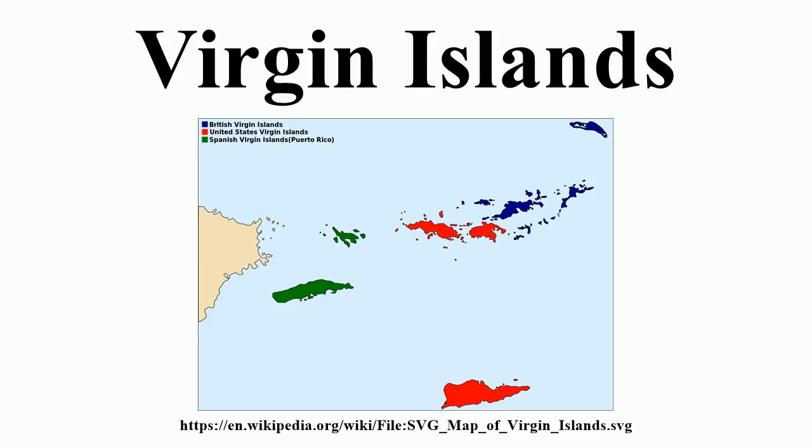The U.S. Virgin Islands is one of five inhabited insular areas of the United States, along with American Samoa, Guam, Northern Mariana Islands, and Puerto Rico. The territory comprises a number of islands including St. Croix, St. John, St. Thomas, and Water Island.